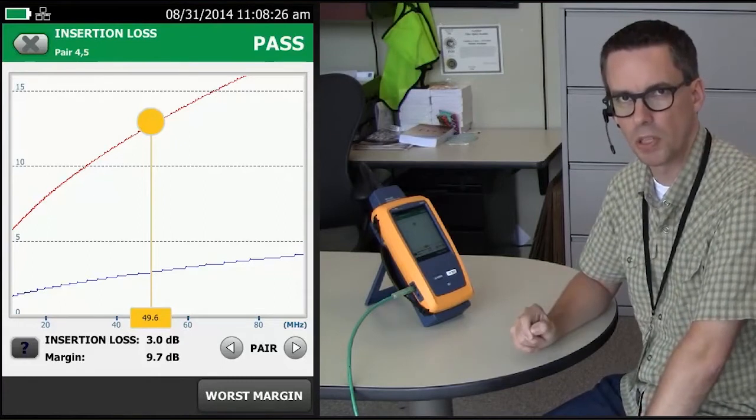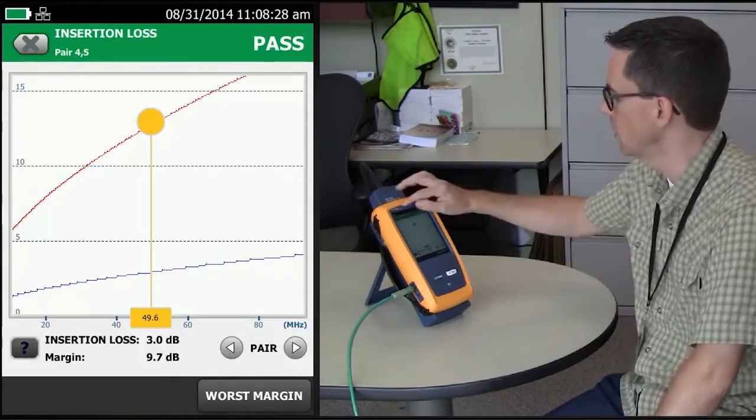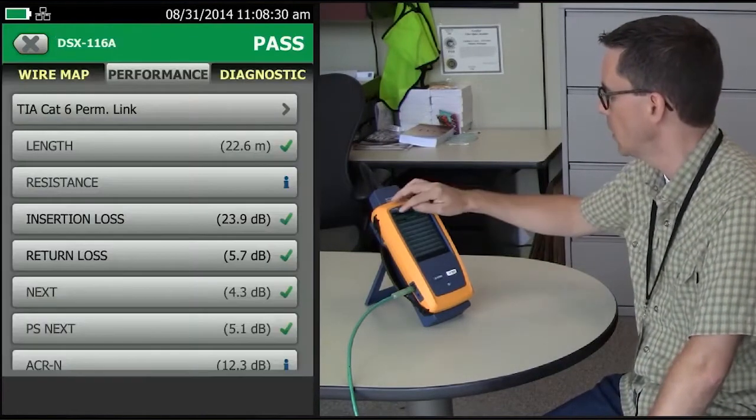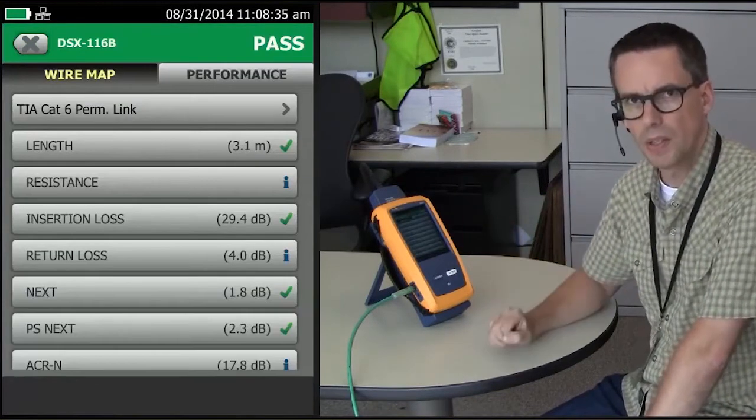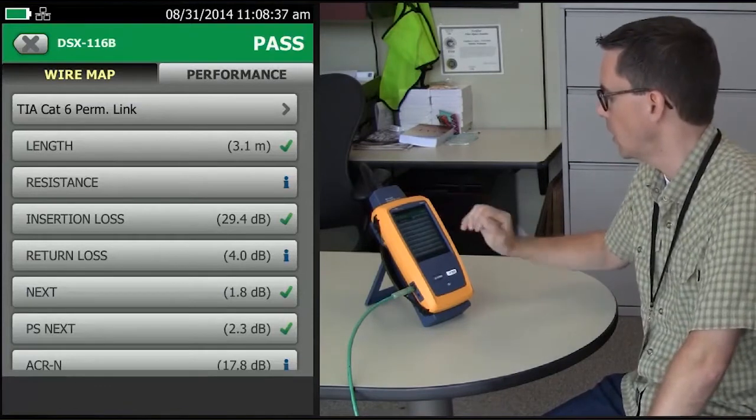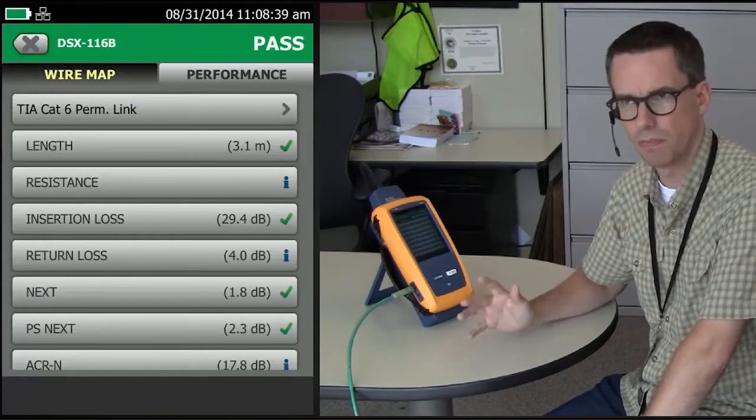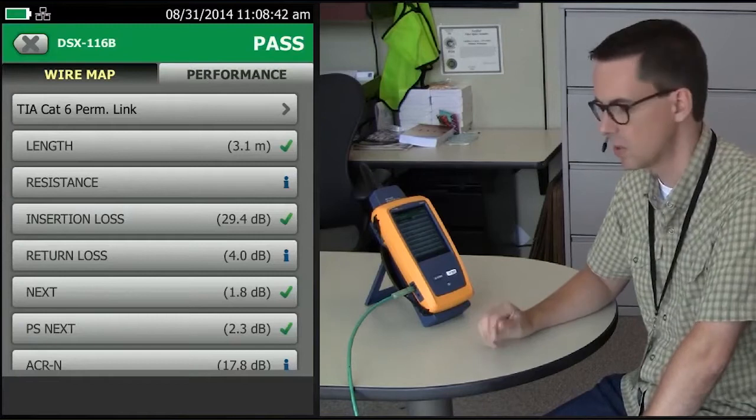Now there is a quirk of the 3 dB rule which does generate questions. Let me open up another example from my test files. In this example here, it's a very short link. It's only 3 meters, a little over 9.5 feet, 10 feet.